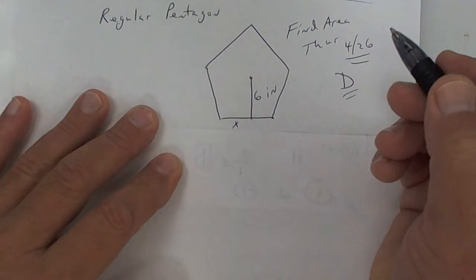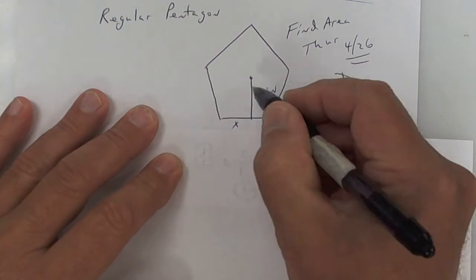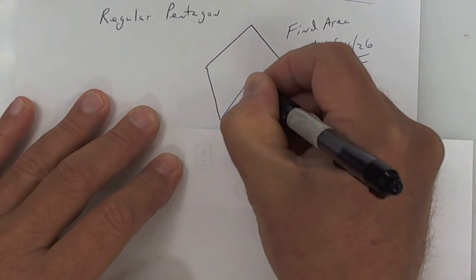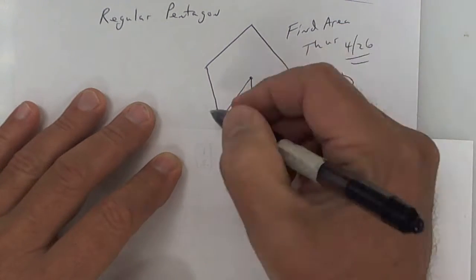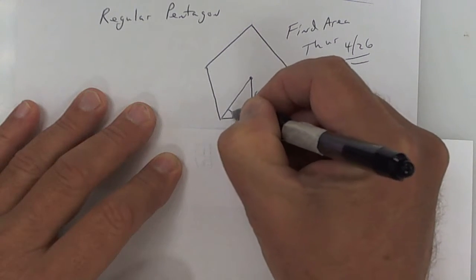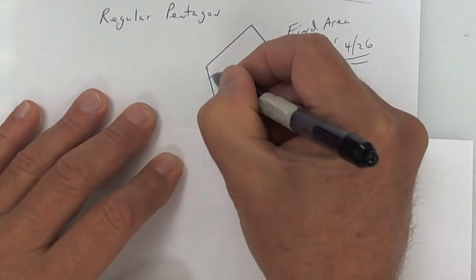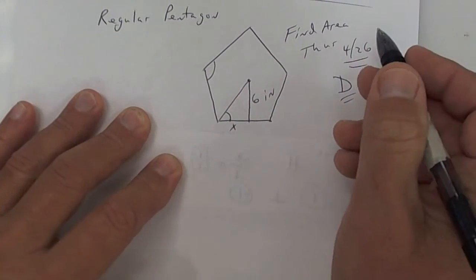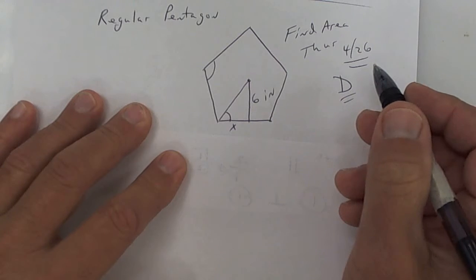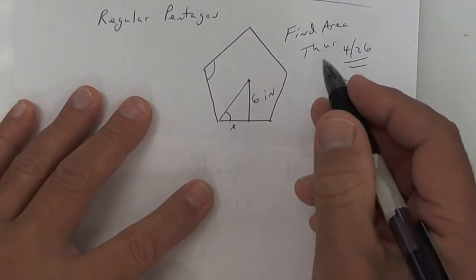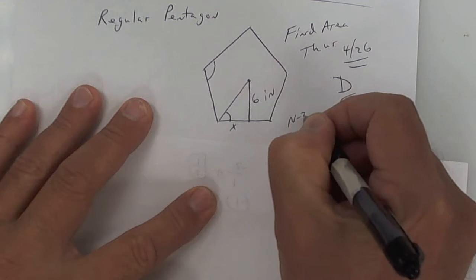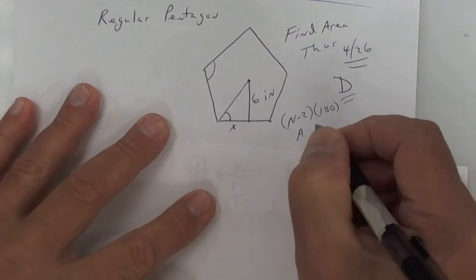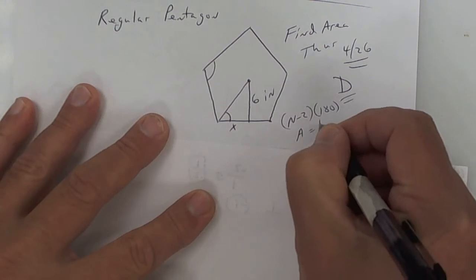After you draw this figure, you can see that the apothem is 6. Make a triangle here. To get this angle, you first figure out what one of these angles is. The real formula we should be using is N minus 2 times 180 — you've got to memorize that. Plus, remember that the area of a regular polygon equals one half ap.